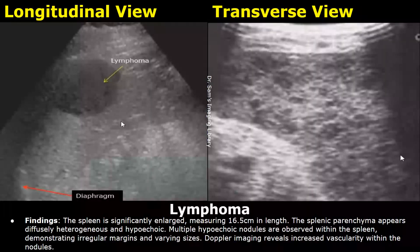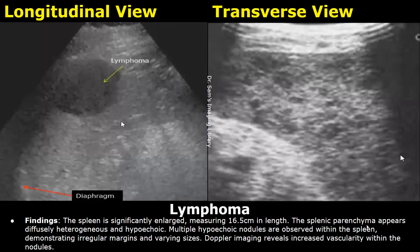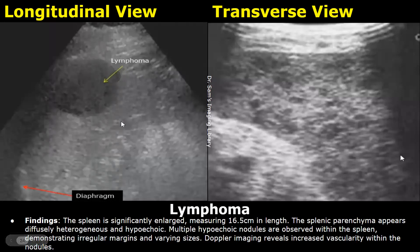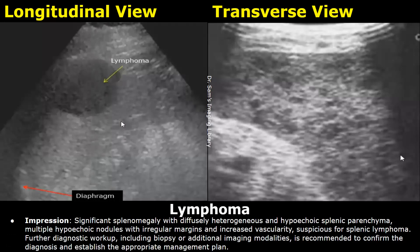Here is a case of lymphoma. The findings include an enlarged spleen. The splenic parenchyma is diffusely heterogeneous and hyperechoic. Multiple hyperechoic nodules are observed within the spleen, demonstrating irregular margins and varying sizes. Doppler imaging reveals increased vascularity within the nodules. In the impression: significant splenomegaly with diffusely heterogeneous and hypoechoic splenic parenchyma, multiple hypoechoic nodules with irregular margins and increased vascularity, suspicious for splenic lymphoma.